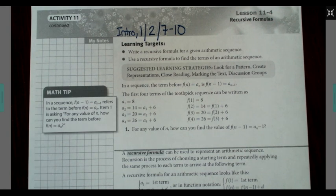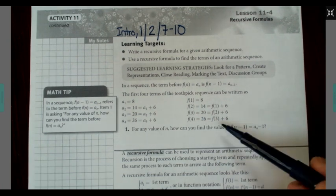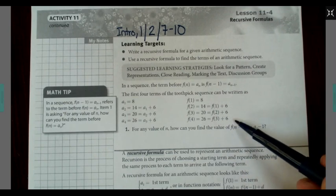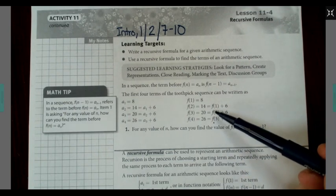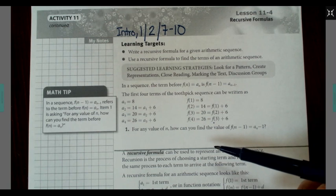If we wrote this as function notation, we would write f of 1 equals 8, f of 2 equals 14, which is equal to f of 1 plus 6, f of 3 equals 20, which is f of 2 plus 6, f of 4 equals 26, which is f of 3 plus 6. So it's taking that previous number each time and adding 6.